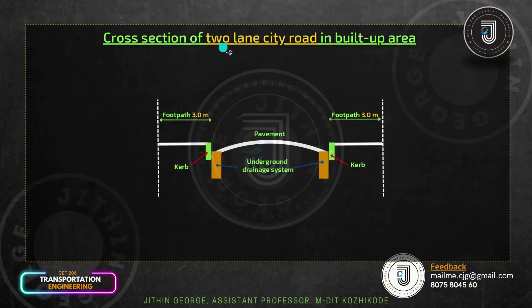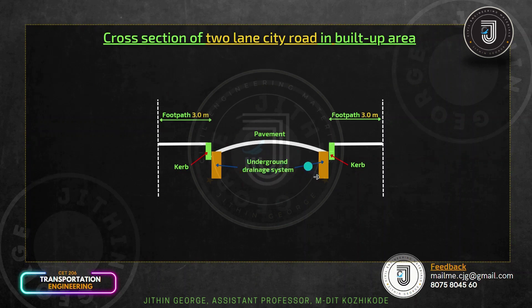Next, cross-section of two-lane city road in built-up area. Built-up area means urban area. In an urban area, for a two-lane city road, the pavement has an underground drainage system on both sides. This is a typical cross-section of a two-lane city road in a built-up area.